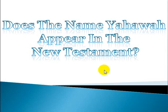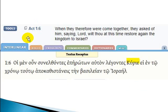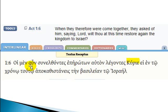We're going to get started right away. This is Acts chapter 1, verse 6 — the disciples coming to Yahashiah and asking him if he was going to bestow the kingdom unto Israel at this time. They said, 'When they therefore were come together, they asked of him saying, Lord, wilt thou at this time restore again the kingdom to Israel?' The word in English is Lord, and when you read through the Greek, you have Kurie, which goes to the word Kurios, which means Lord. And this is correct.